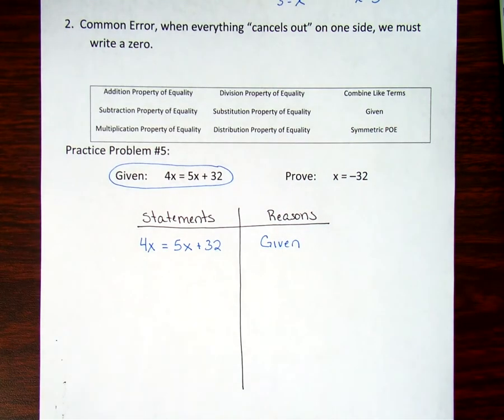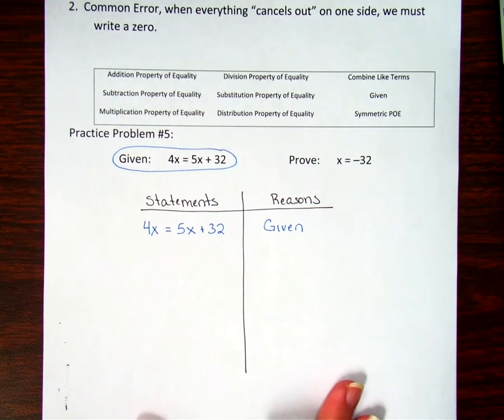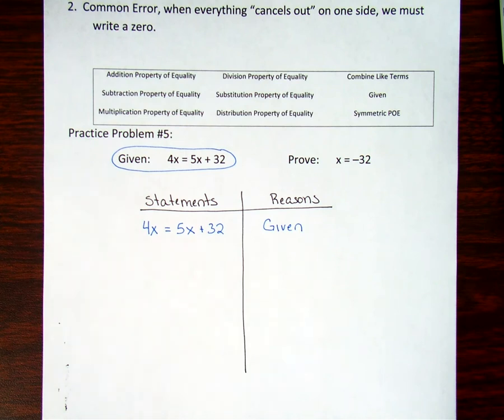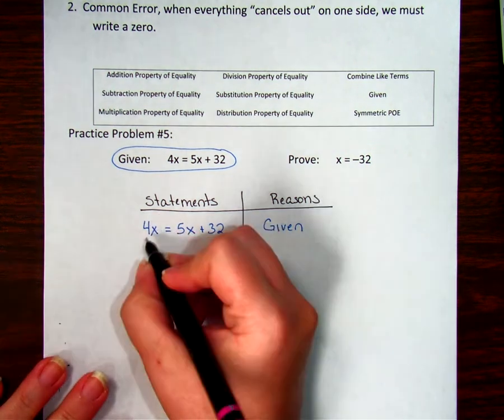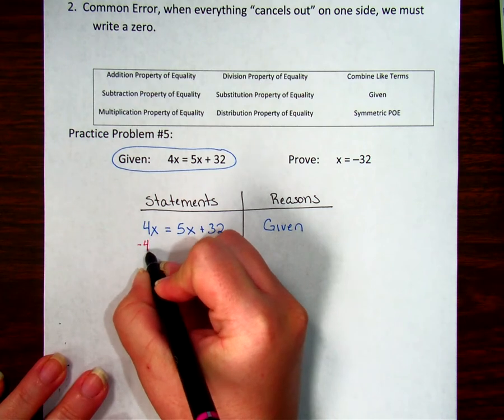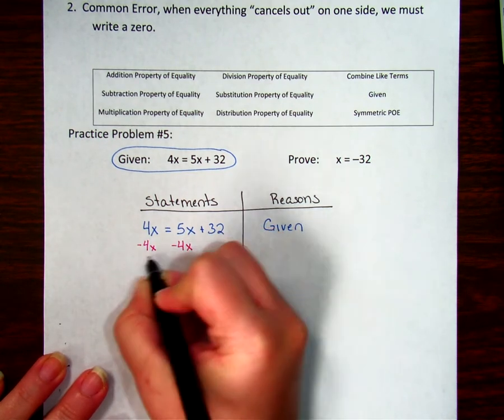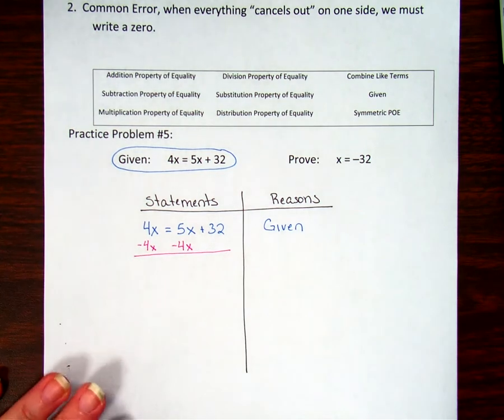Now a common thing a lot of people have been taught to do is to try to keep their X values positive. So in this case, if my X's are 4X and 5X, then I want to move the smaller one to try to keep my X's positive. This is something that we tend to do a lot. So I'm going to subtract 4X on both sides so I can keep that X positive.